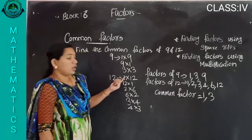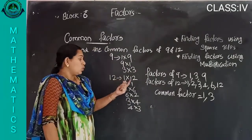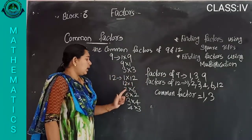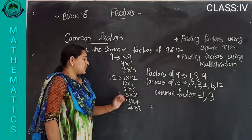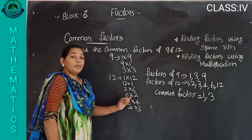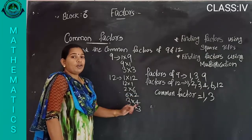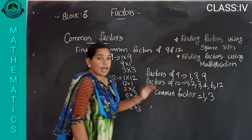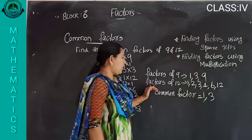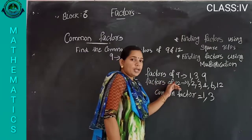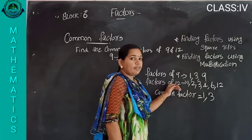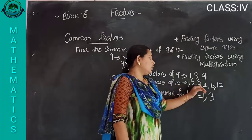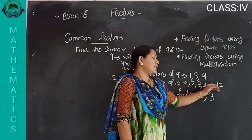Then twelve: one into twelve, twelve into one, two into six, six into two, three into four, four into three. Factors of twelve: one, two, three, four, six, twelve.